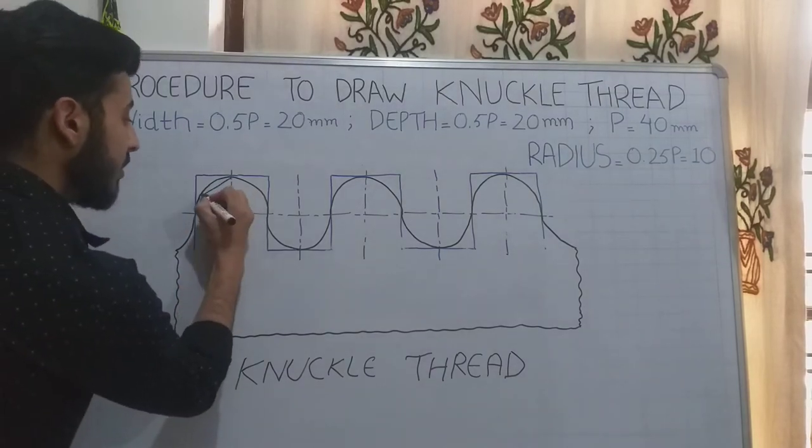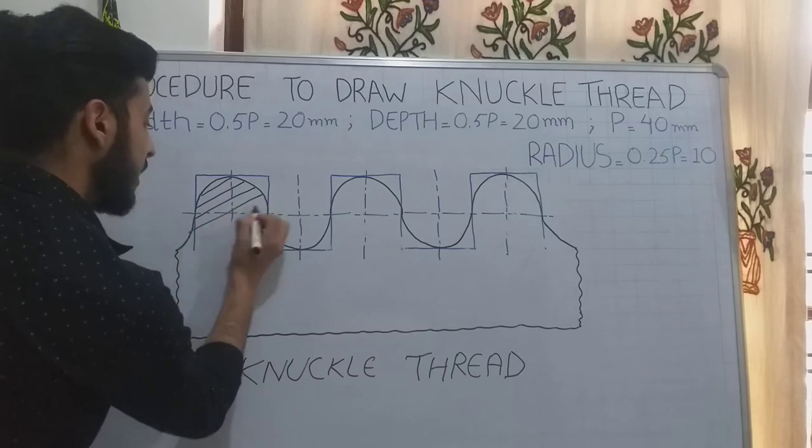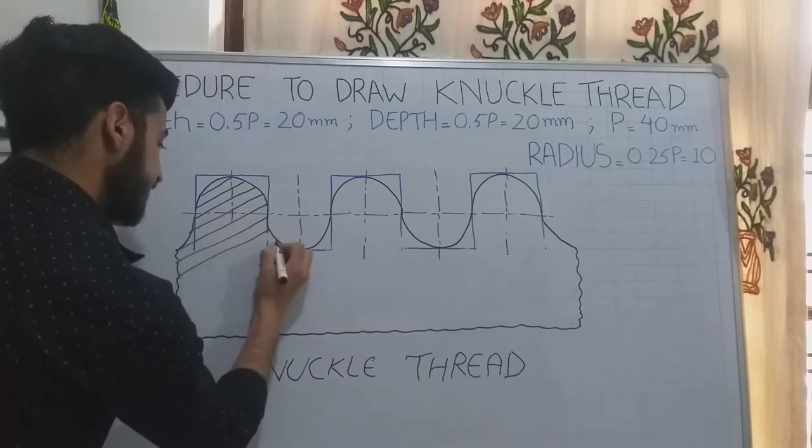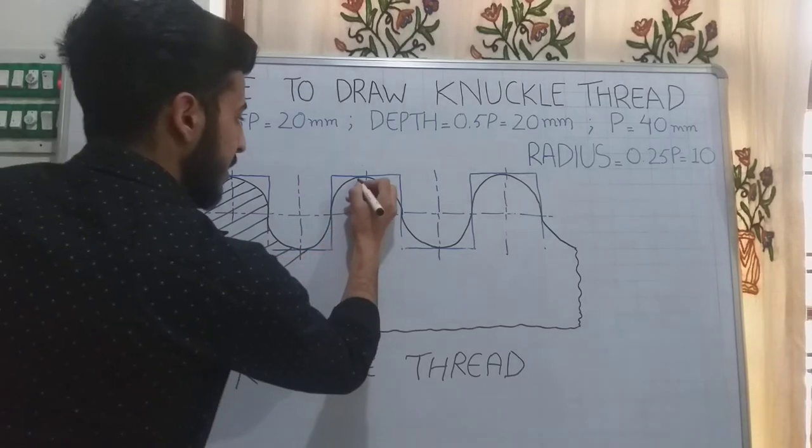In the last lecture, I mentioned that hatching lines are drawn at an angle of 45 degrees. These are equidistant.